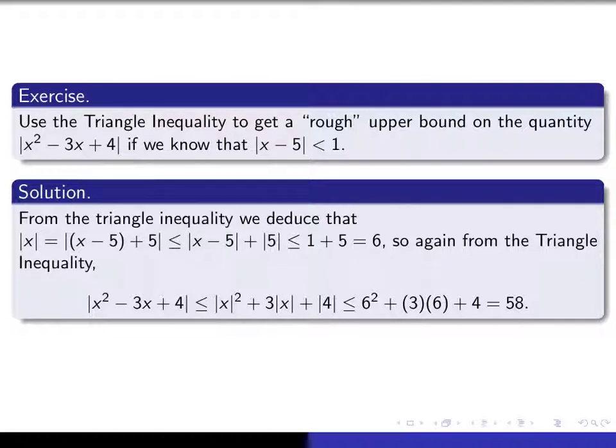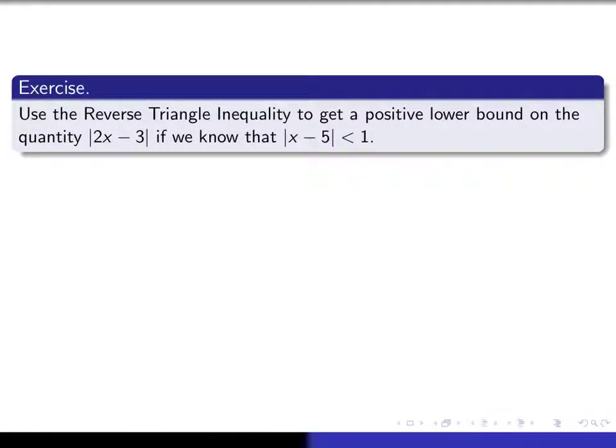That's a fairly typical use of the triangle inequality. Now in this one, we're going to try to make use of the reverse triangle inequality to get a positive lower bound on this quantity, absolute value of 2x minus 3, if we know that absolute value of x minus 5 is smaller than 1.